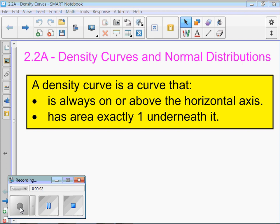Yesterday, in order to be a density curve, you have to be above the horizontal axis, on or above it, and you also have to have an area of exactly 1.